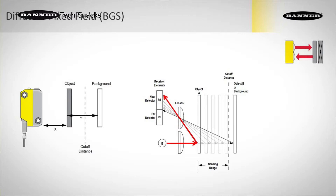In this example, you see the light emits from the emitter and hits a target. The closer that target is, the greater the attack angle is, and it hits receiver one. As long as light is hitting receiver one, it keeps the output on. But as that target backs up, the angle changes until it hits receiver two. Any light that hits receiver two turns the output off. So in this case, when we have a fixed range, we know exactly where that range ends.